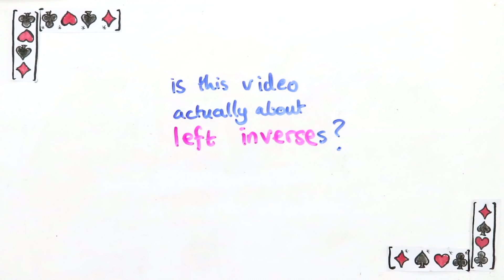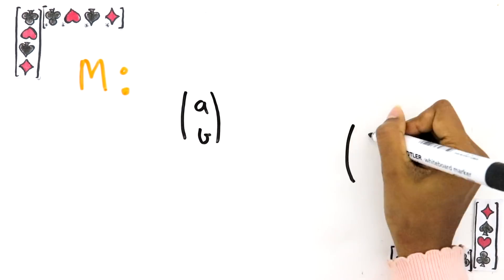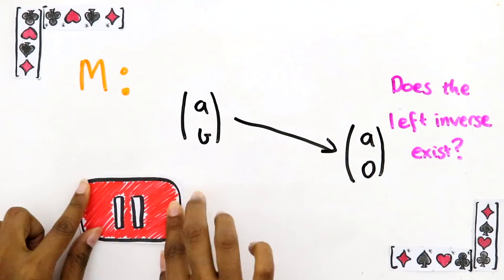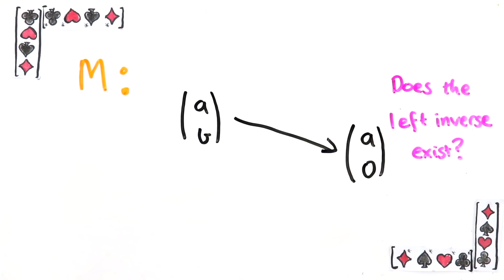Here's another question. This matrix takes a 2D vector, AB, and sends it to A0. Does this matrix have a left inverse? If so, figure out what it is. Again, put your answer in the poll in the corner and pause now to think about it.